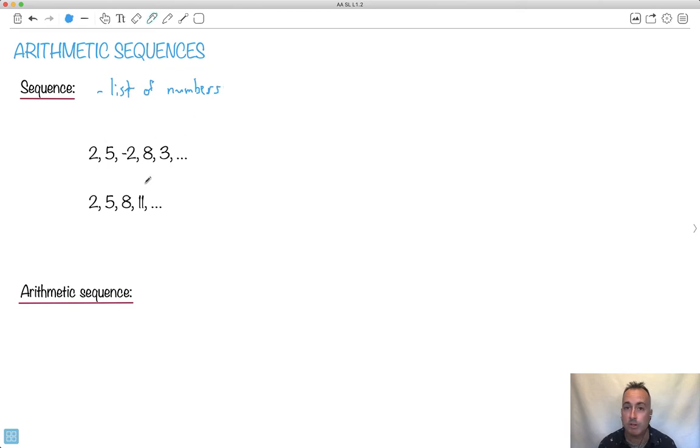Here, for example, here's two different lists. This one right here, if we look at this list of numbers: two, five, negative two, eight, three. Can you find the pattern? Hopefully not, because there's not meant to be one. There's no pattern. So this is actually pretty boring. This is not a special kind of sequence. It's just a generic sequence.